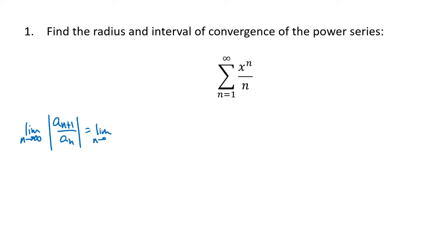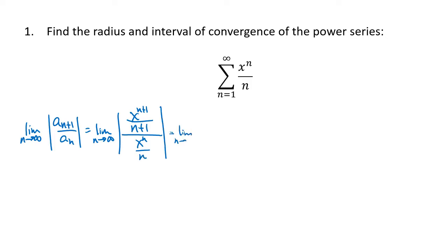We set this up using our expression here. So a_{n+1} is x to the n+1 divided by n+1, and a_n is x to the n divided by n. Since we've got a fraction divided by a fraction, we're going to flip over the bottom fraction and multiply. That gives us x to the n+1 divided by n+1, multiplied by n divided by x to the n.